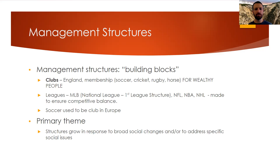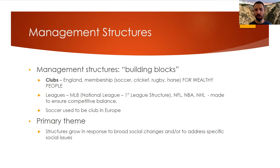Leagues started to form, so you have clubs and then you have leagues. Major League Baseball is the first league structure — the National League — and the NFL, NBA, and NHL eventually followed suit. This creates competitive balance. If you hear in the NFL they say 'any given Sunday,' that's because the league is really competitively balanced for the most part. A primary theme: structures grow in response to social changes and social issues. Leagues will grow in response to social issues.